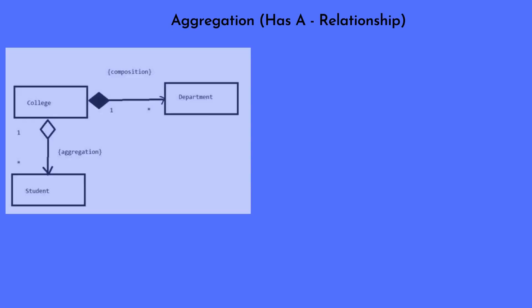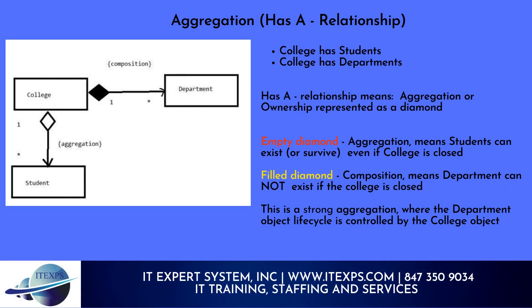Now let's talk about aggregation — the 'has-a' relationship. For example: a college has students, a college has departments. A 'has-a' relationship means aggregation or ownership, represented as a diamond in UML. An empty diamond means aggregation — students can exist or survive even if the college is closed. A filled diamond means composition — a department cannot exist if the college is closed. This is strong aggregation, where the department object's lifecycle is controlled by the college object.